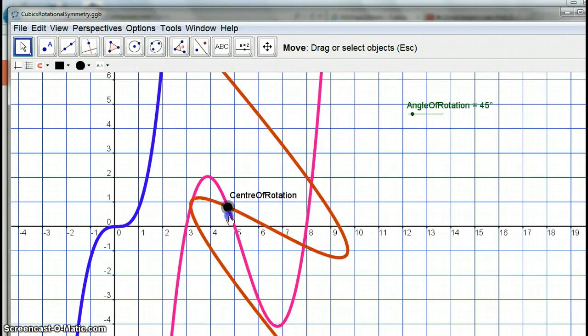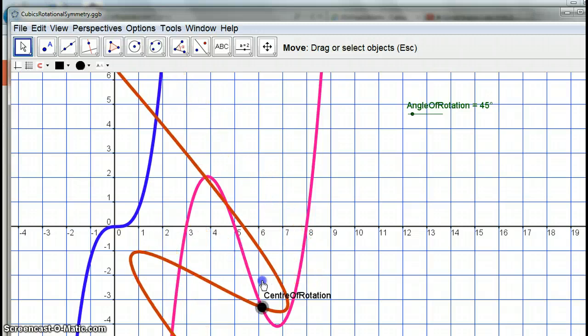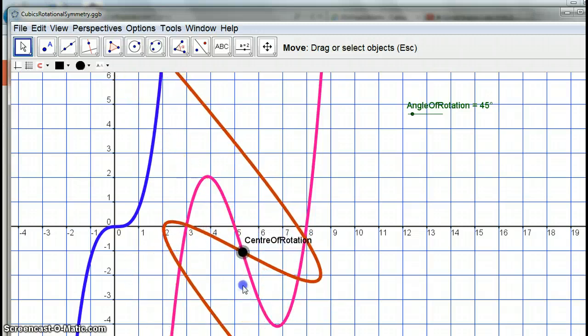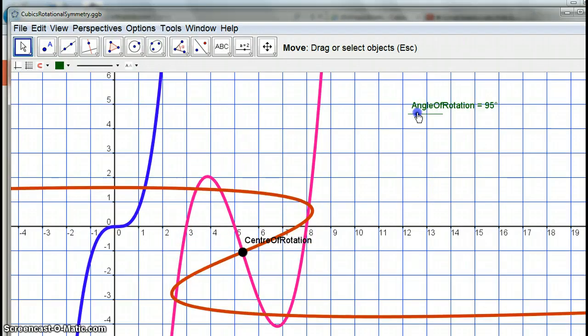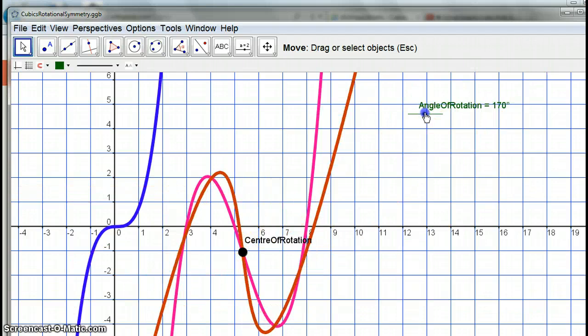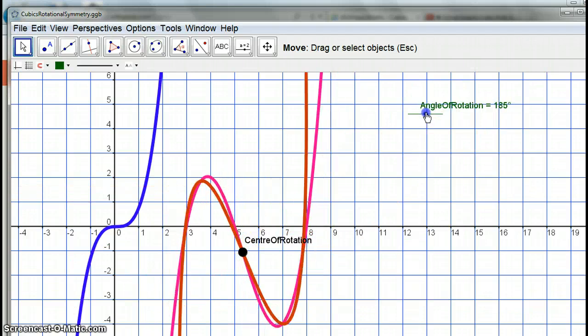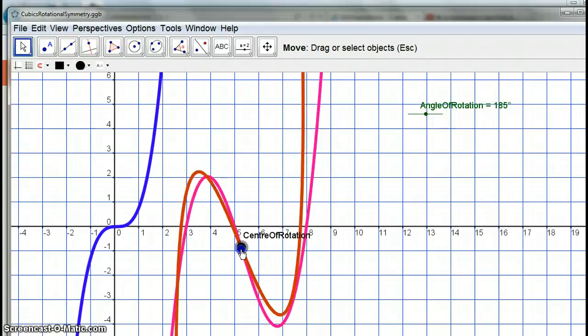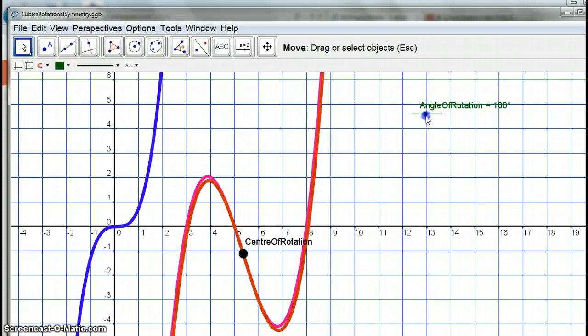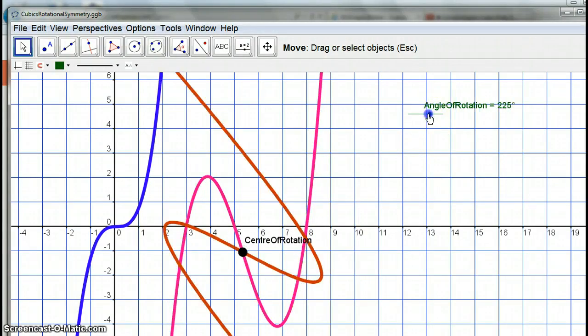So what I'm going to try and do is work out where the centre of rotation would be in a cubic. So if we do that, we're now getting that to 180 degrees. Can you see if I move my centre? Oh, I need exactly 180. There we go. I'm going to move my centre of rotation until the thing maps onto each other. So, here we go.